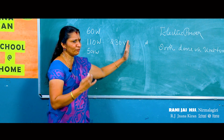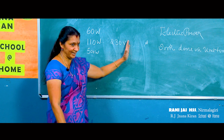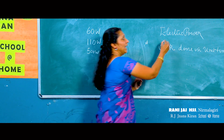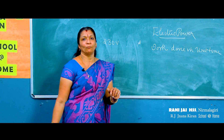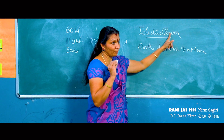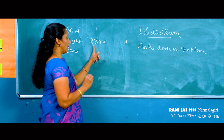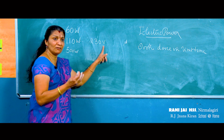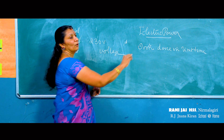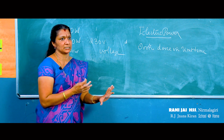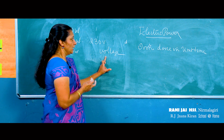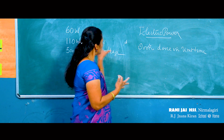Think for two minutes — you will be able to understand. What is watts representing? It is representing the electric power of the appliance. And the other marking — 230 volts — this represents the voltage which is supplied to that appliance.